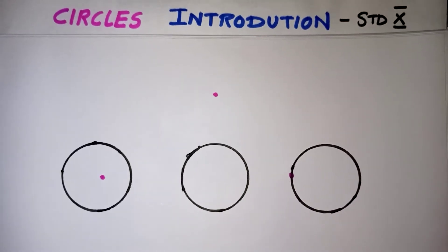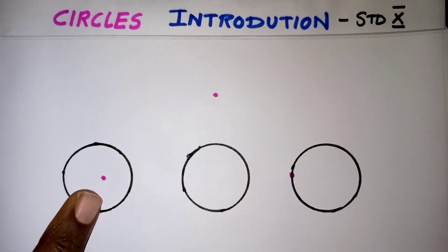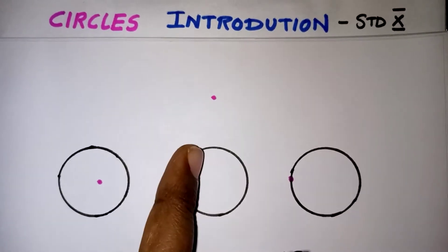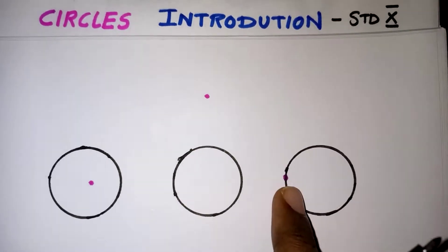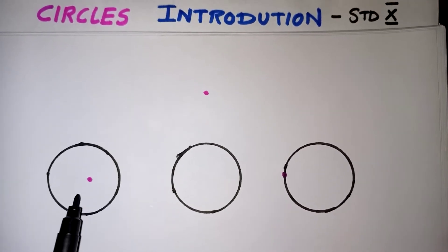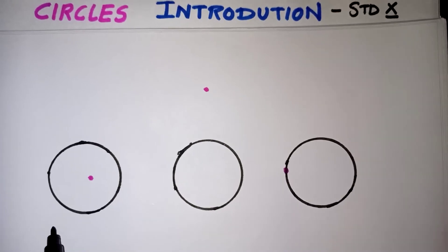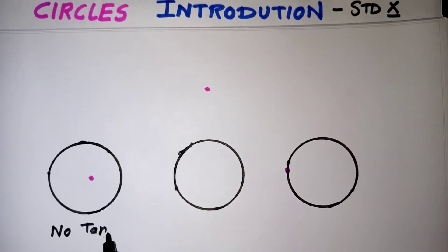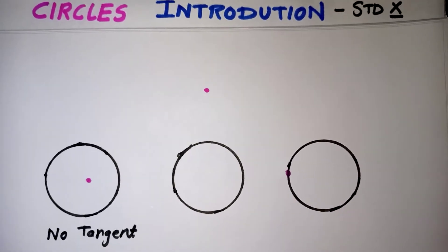Look at these circles. We have three different point positions: a point can be inside the circle, outside the circle, or on the circumference of the circle. From a point which is inside the circle, we cannot draw any tangent — no tangent is possible from an interior point, because the tangent must touch the circle at only one point from outside.